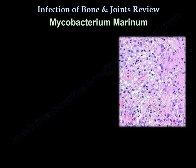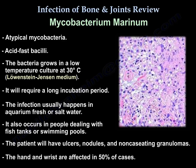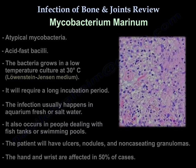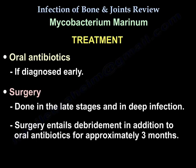Mycobacterium marinum is an atypical mycobacterium and an acid-fast bacillus. The bacteria grow in low-temperature culture at 30 degrees centigrade on Löwenstein-Jensen medium and require a long incubation period. Infection usually happens in aquarium fresh or salt water, or in people dealing with fish tanks or swimming pools. Patients will have ulcers, nodules, and non-caseating granulomas, with the hand and wrist affected in 50% of cases. Treatment is oral antibiotics if diagnosed early; surgery — debridement plus oral antibiotics for approximately three months — is done in late stages and deep infection.